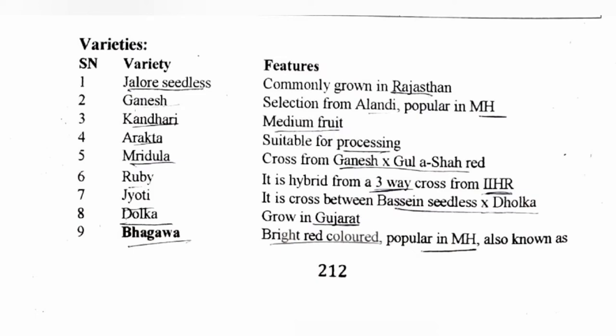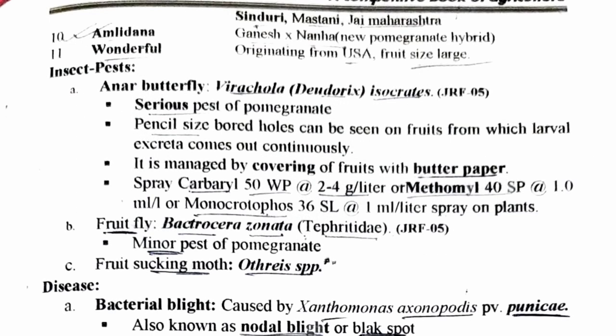Jyoti is a cross between Basin Seedless and Dholka — Dholka, as the name suggests, is from Gujarat. Bhagawa, the leading variety in Maharashtra, has bright red color, which is why it is also known as Sinduri. Mastani is also from Maharashtra. Amlidana is a cross between Ganesh and Nanha — it is a new hybrid. The last one is Wonderful, originating from USA, with large fruit size.